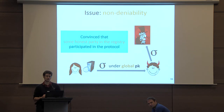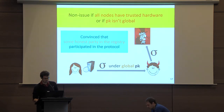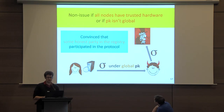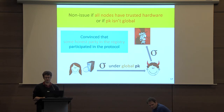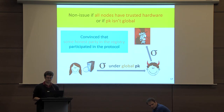This non-deniability issue is something the ideal notion of two-party computation doesn't allow for. It's also intuitive to see that this wouldn't be an issue if both parties had a secure processor, because then Bob could have just produced this attestation himself — providing a notion of plausible deniability for Alice.